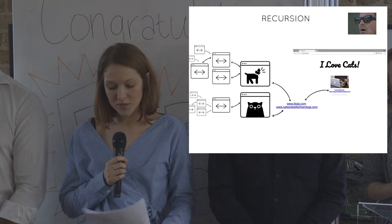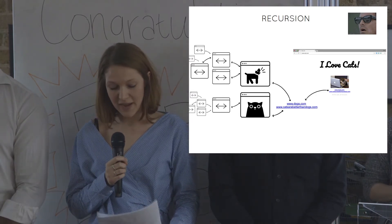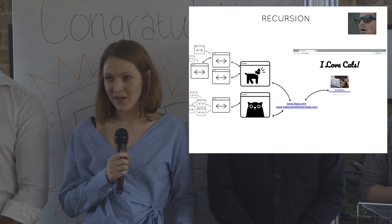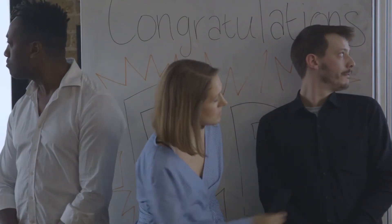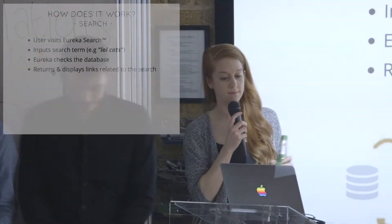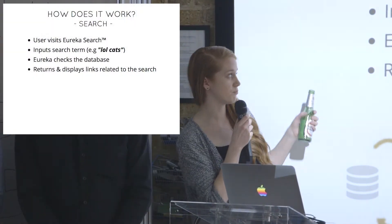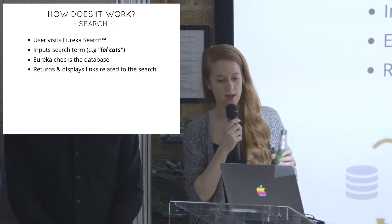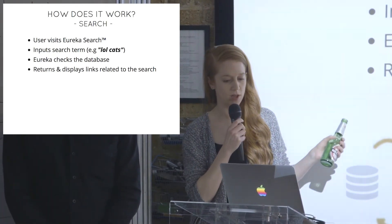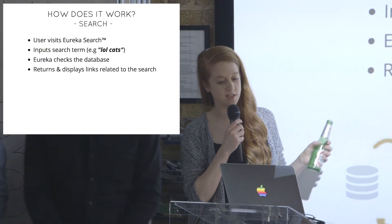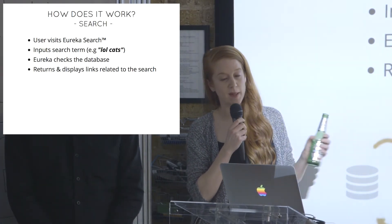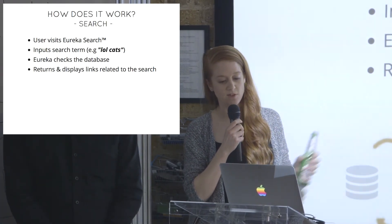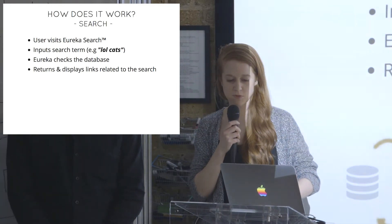Recursion is central to populating a search engine database and continuing a crawl. So, how does a search line work? It's pretty simple: the user visits EurekaSearch, inputs their search term — e.g., lolcats — and EurekaSearch checks the database and returns and displays those links related to the search. It's pretty nifty.